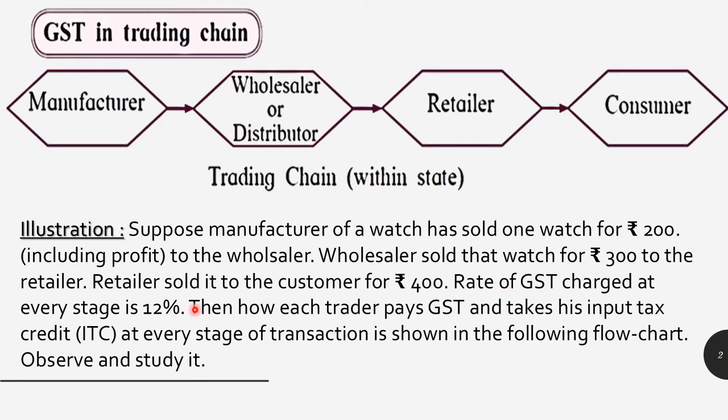The rate of GST charged at every stage is 12%. So the first transaction between manufacturer and wholesaler has 12% GST charged; the next between wholesaler and retailer also has GST charged; and the third between retailer and consumer also has 12%. At every stage 12% GST is charged. It's not that at every stage a bulk tax goes separately to the government — as a whole 12% GST is charged across the chain.